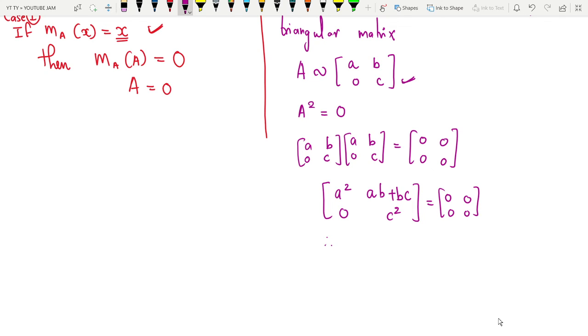If I compare the two matrices, I get a² = 0 and c² = 0. Therefore, I found a = 0 and c = 0. Therefore, my A is similar to [0 b; 0 0].